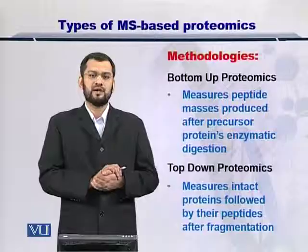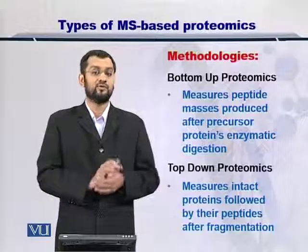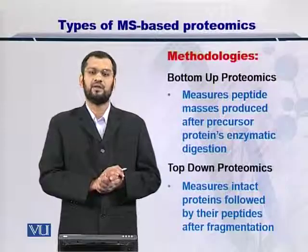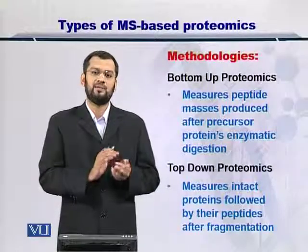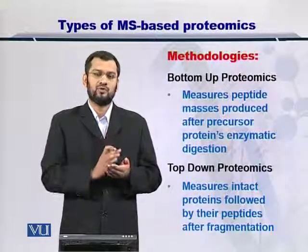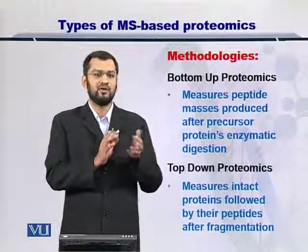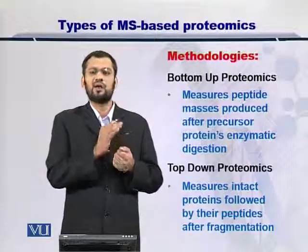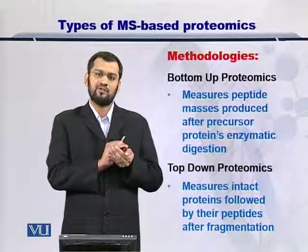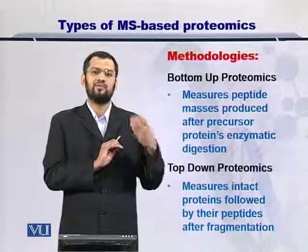The second approach is the top-down proteomics approach, which is a more modern approach. In top-down proteomics, whole proteins are first measured for their molecular weight. Once you have the molecular weight of a protein, it is then fragmented into its peptides — not using an enzyme, because the protein is already in the chamber of the mass spectrometer. Therefore, other strategies are used to fragment the protein. Once you have measured the mass of the whole protein and fragmented it, you can then measure the molecular weight of the fragments as well.